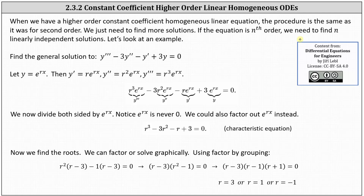Let's look at an example. Let's determine the general solution to y triple prime minus three y double prime minus y prime plus three y equals zero. Just like we did for the second order equation, we will assume the solution is y equals e to the power of rx. Next, we determine the first through third derivatives using the chain rule, and then perform substitution into the differential equation, which gives us the equation shown here.